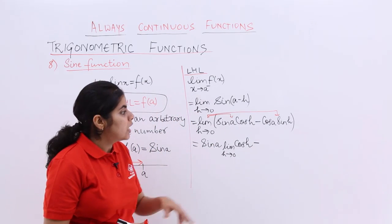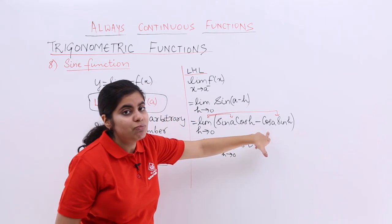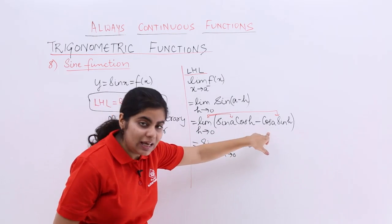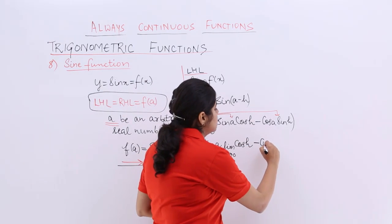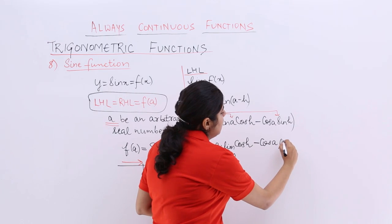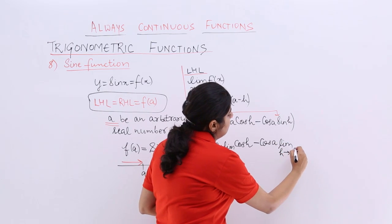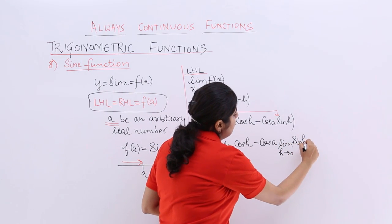Cos a sine h. This time we have cos a as the real number, constant, comes outside. Then the limit goes with sine h. I hope this makes sense and is clear.